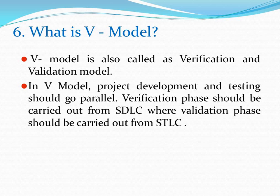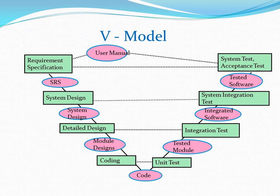What is V Model? V Model is also called Verification and Validation Model. In V Model, project development and testing should go in parallel. The verification phase is carried out from one side of the SDLC and the validation phase from the other side. In the diagram, the left-hand side is the verification phase and the right-hand side is the validation phase.